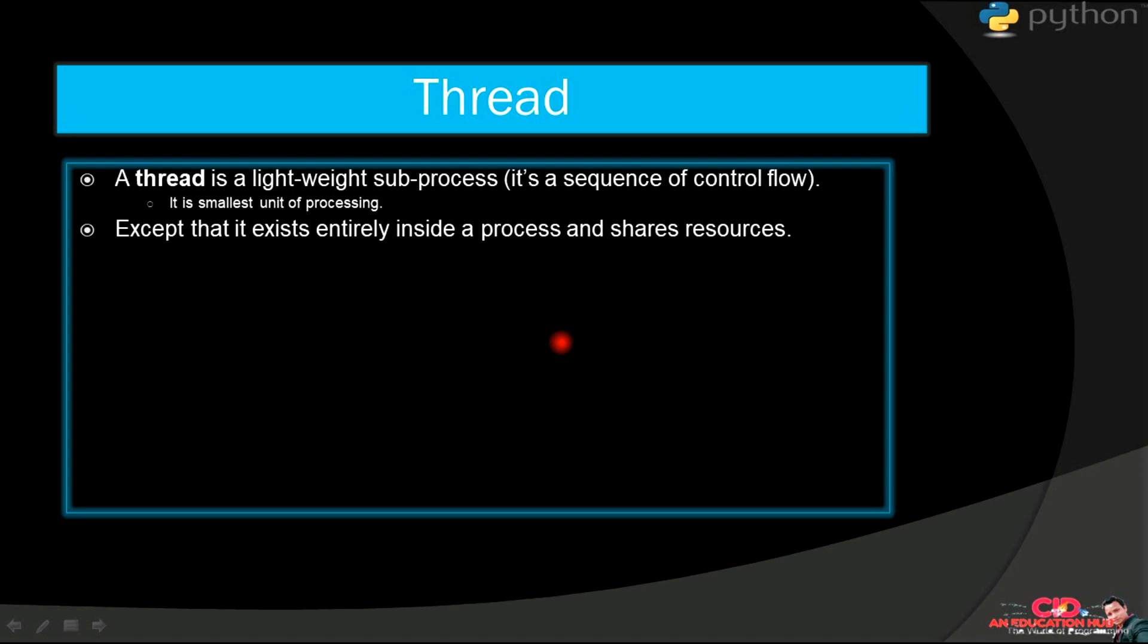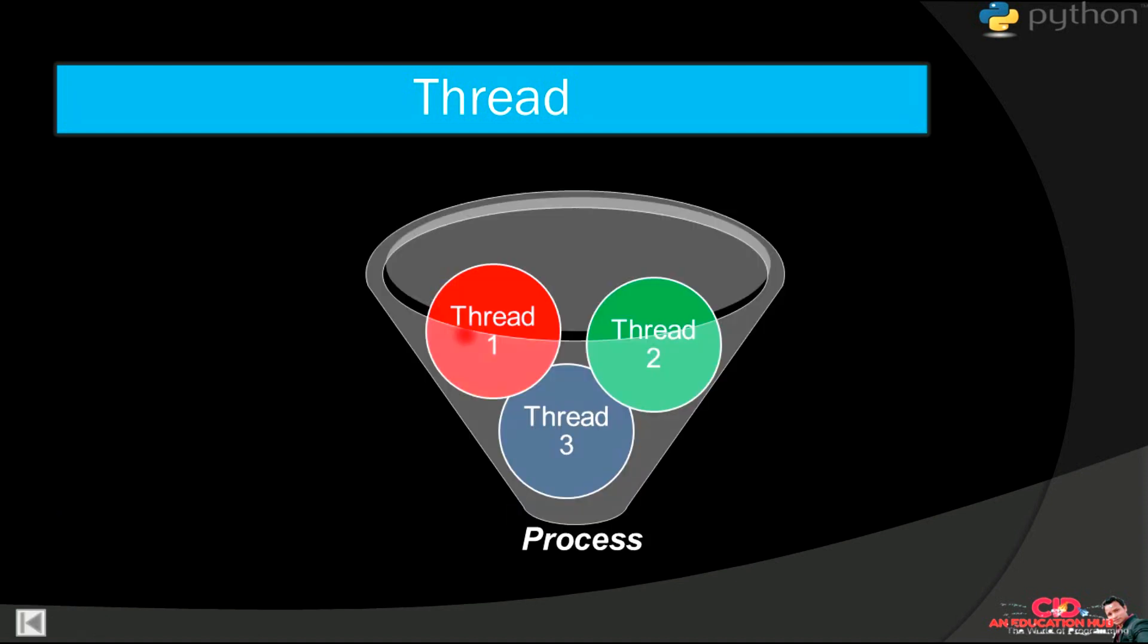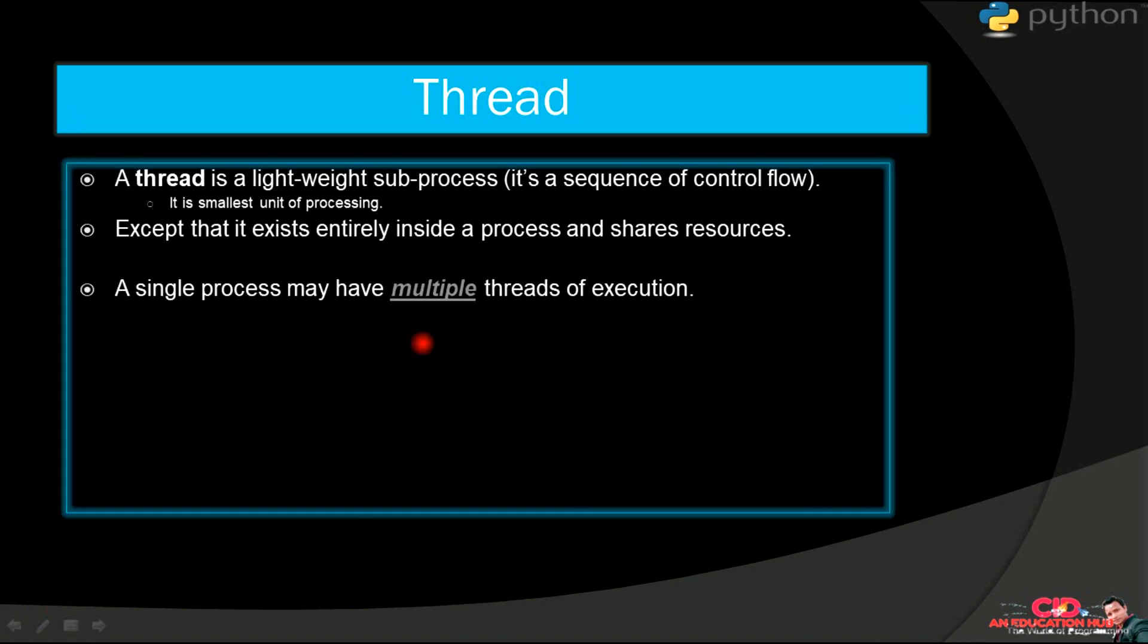Because we have studied that thread is only a part of the process, except that it exists entirely inside a process and shares all the resources inside the process. A single process may have multiple threads of execution. Like you can assume this is a process, maybe this basket is a process and it has multiple threads like thread 1, thread 2, thread 3, etc. inside this process. And all these threads will be independent of each other, but they can be able to share any type of data to each other.